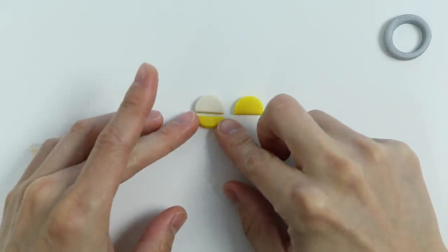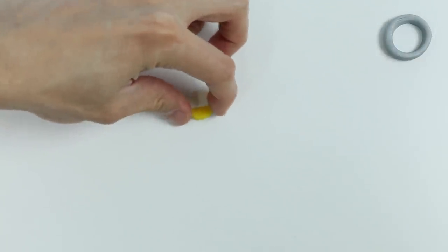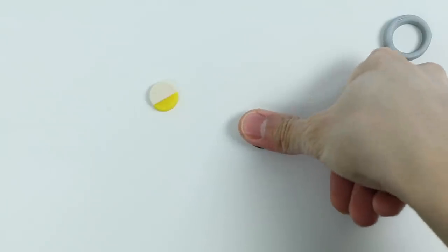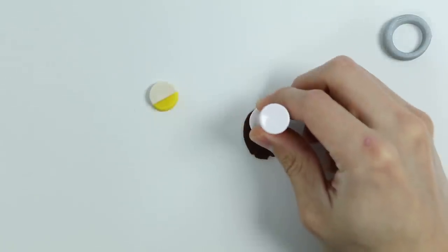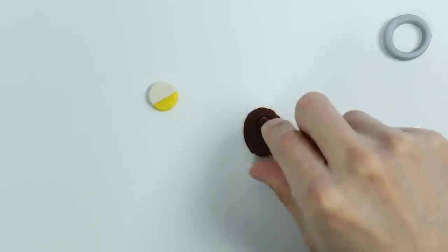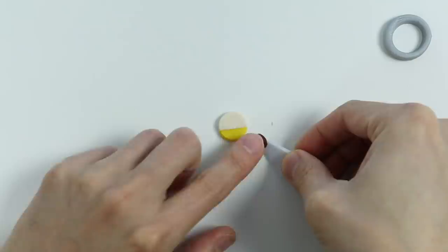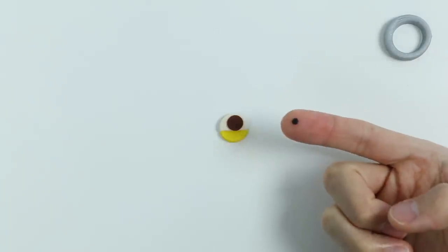Now let's attach the two pieces together. We're almost done making Minion Stewart's eye. Now let's roll out some brown Play-Doh, make a smaller circle. This brown circle is the iris, so let's attach this to the white part of the circle. Now let's attach this black pupil.